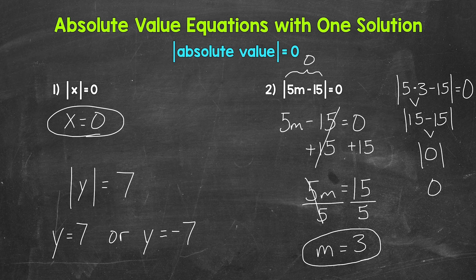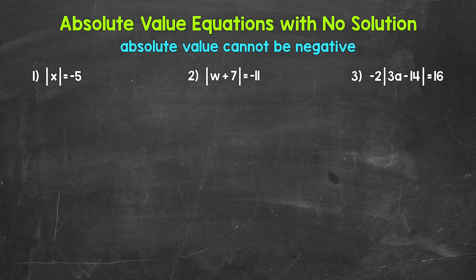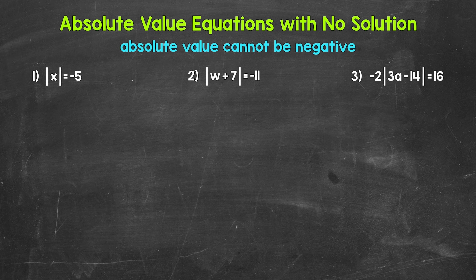There is our one-solution section. Let's move on to absolute value equations with no solution. Keep in mind: the absolute value of something — whether it's a number or an expression — cannot be negative. The absolute value of something is always going to be positive or 0. Let's look at number 1: the absolute value of x equals negative 5. The absolute value of something cannot be negative, so there's no way to make this work. There isn't anything x can equal where the absolute value will equal negative 5. The absolute value of negative 5 is 5, not negative 5. There is no solution.